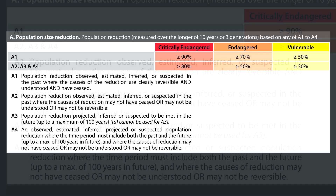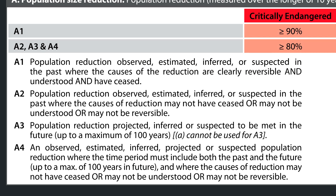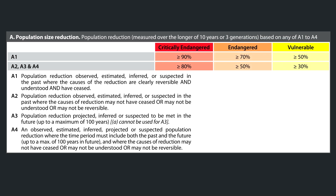A4 is an observed, estimated, inferred, projected, or suspected population reduction where the time period must include both the past and the future up to a max of 100 years, and where the causes of reduction may not have ceased, or may not be understood, or may not be reversible. This could be used in a case where the population is in decline but hasn't quite met the thresholds for either A1 or A2 yet.